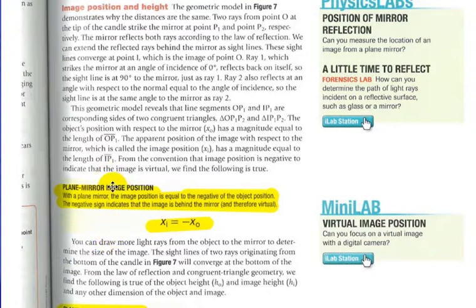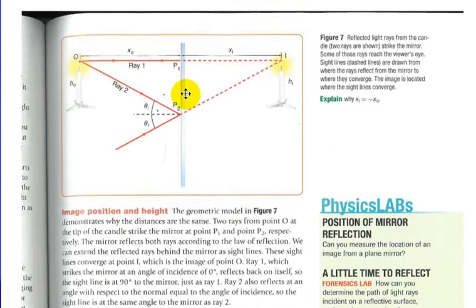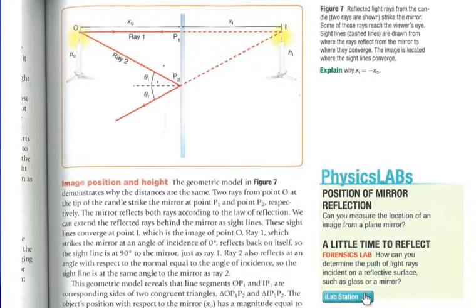I'm not going to go through all that because there's a second method here that we're going to look at and have some practice with. Plain Mirror Image Position. With a plain mirror, the image position is equal to the negative of the object position. The negative sign indicates that the image is behind the mirror and therefore virtual. In other words, if I was to draw a perpendicular line from a point on the object, extend that behind the mirror, it would be an equal distance, but negative since it's behind.